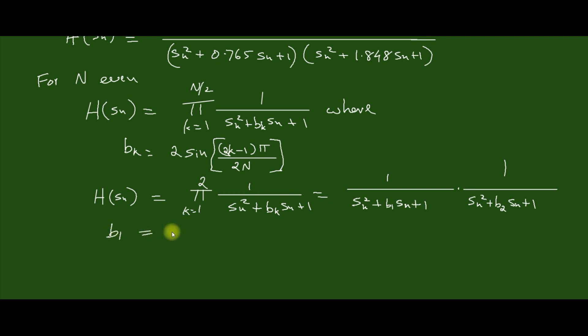Now B_1 is given by 2·sin((2·(1)-1)·π/(2·N)), which is equal to 2·sin(π/8), which equals 0.765.